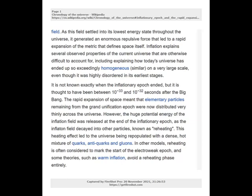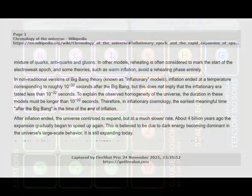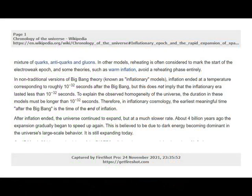This reheating effect led to the universe being repopulated with a dense, hot mixture of quarks, antiquarks and gluons. A quark is a type of elementary particle and a fundamental constituent of matter. Antiquark is the antiparticle of a quark. Quarks are never found alone in nature and combine to form hadrons, such as protons and neutrons. A gluon is an elementary particle that acts as the exchange particle for the strong force between quarks — it is analogous to the exchange of photons in the electromagnetic force between two charged particles. Gluons bind quarks together, forming hadrons such as protons and neutrons. In other models, reheating is often considered to mark the start of the electroweak epoch, and some theories, such as warm inflation, avoid a reheating phase entirely.